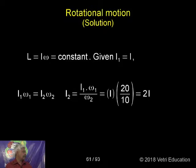Therefore I₁ω₁ is equal to I₂ω₂. Therefore I₂ is equal to I₁ω₁ by ω₂. That is equal to I into 20 by 10, that is equal to 2I. 2I is the moment of inertia.